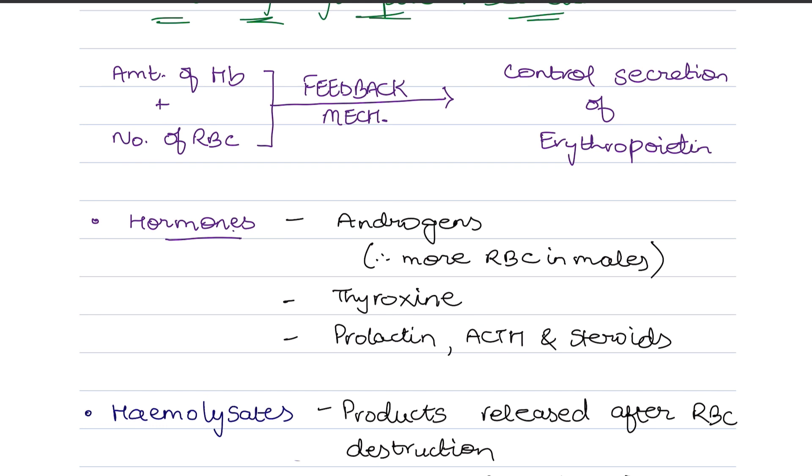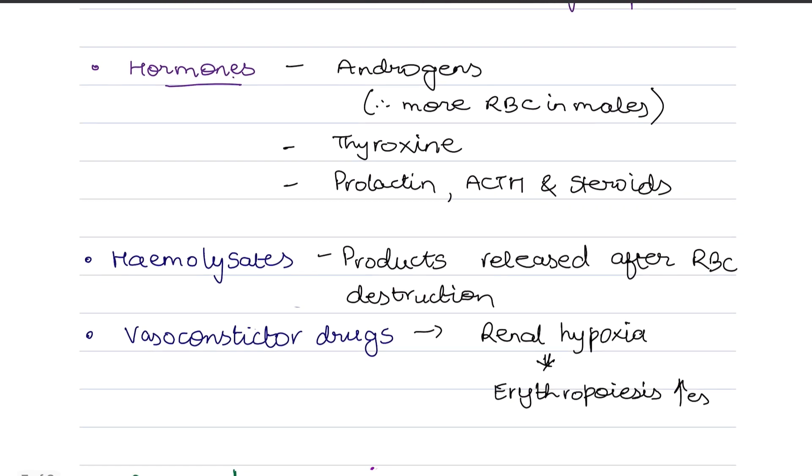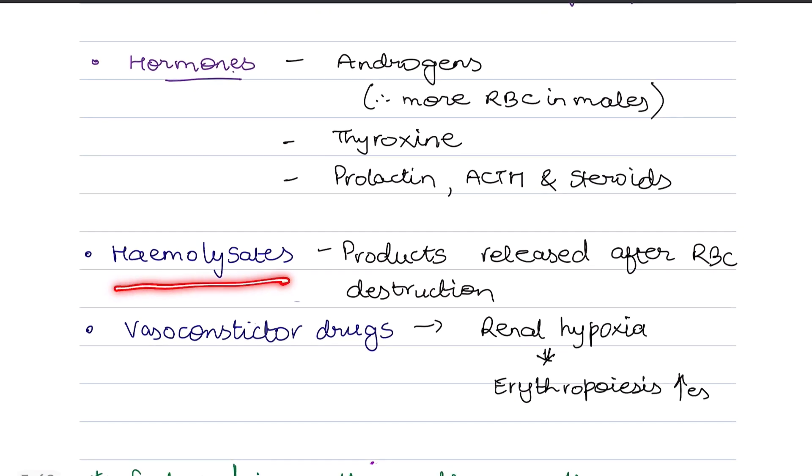Now actually, the number of hemoglobin means the result of RBC is the number of hemoglobin. In this way, the number of hemoglobin is reduced. This is the feedback mechanism that we have to add erythropoietin.